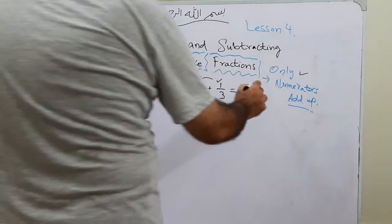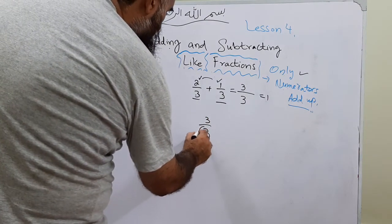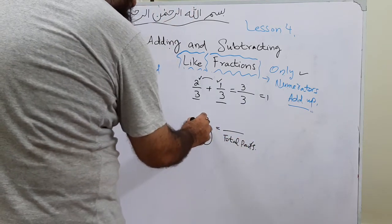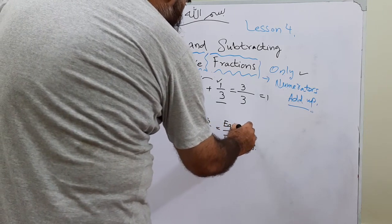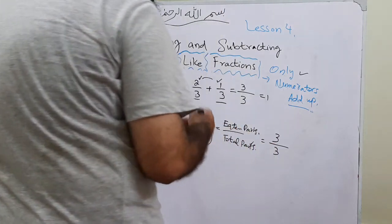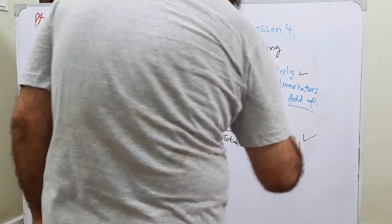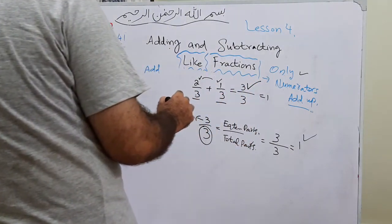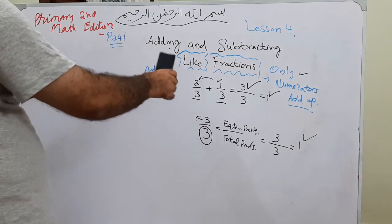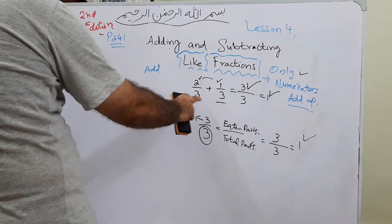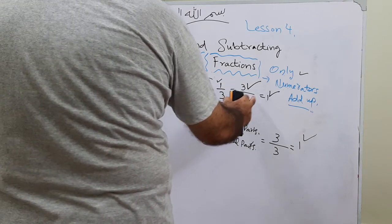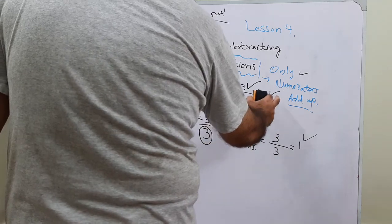3 over 3 is also equal to 1. Let's suppose the total parts of a pizza are 3 and the eaten parts are also 3 — that means you have eaten the whole pizza, which is 1. So the answer 3 over 3 can also be written as equal to 1. This was our lesson on adding like fractions: when denominators are the same, only numerators add up.